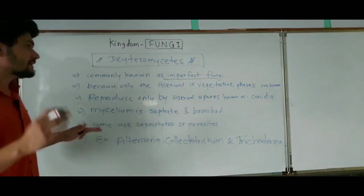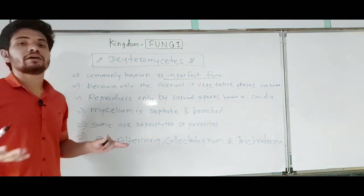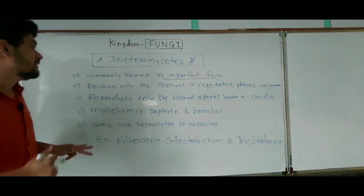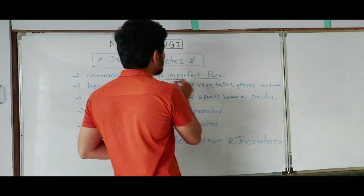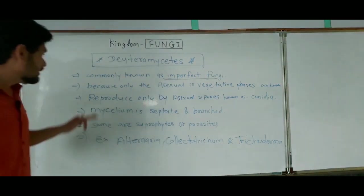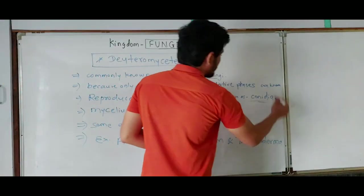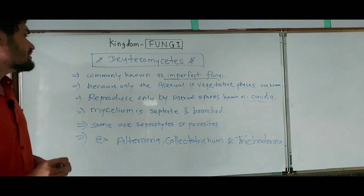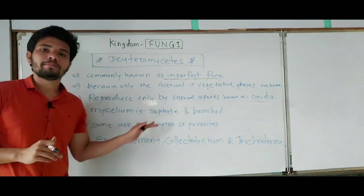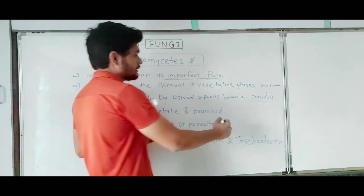Not a single species reproduces by sexual method. That's why these are known as imperfect fungi. They reproduce only by asexual spores known as conidia. Their mycelium is septate and branched, which means they